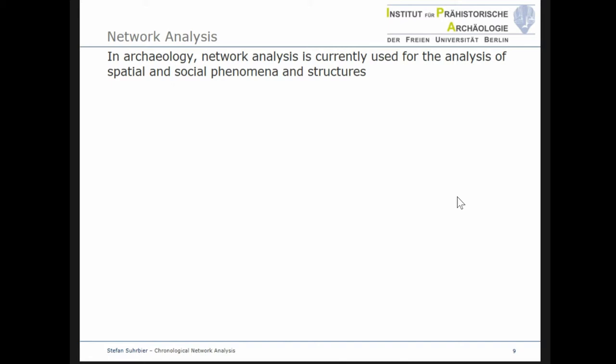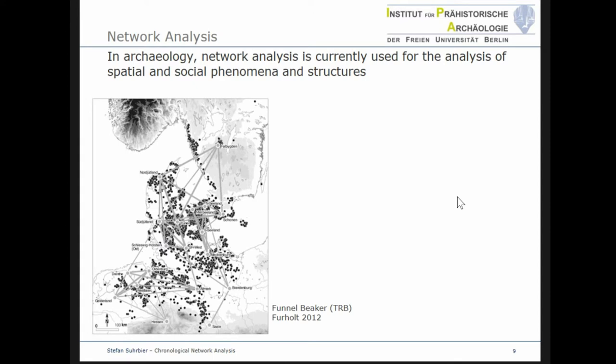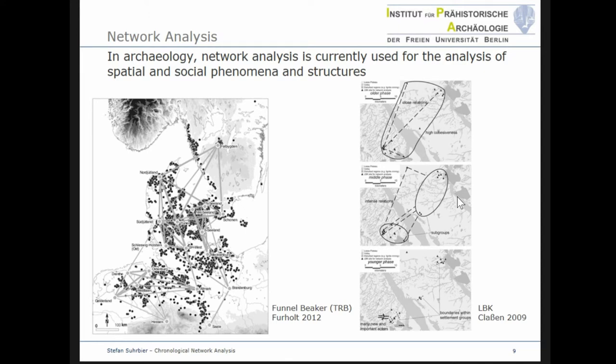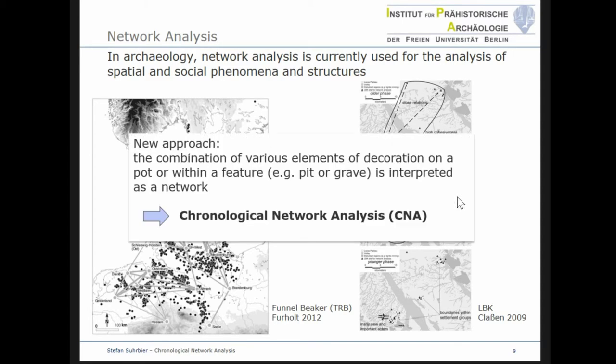Currently in archaeological studies, network analysis is usually used to analyze spatial and social phenomena, as is also reflected by the talks in our session. Studies on spatial network analysis in Central European literature include, for example, Martin Furholt's analysis of funnel-beaker networks or Erik Claßen's analysis of LBK networks of the Rhineland. My approach differs from these since I used network analysis for analyzing chronological dimensions. I interpreted the combination of various elements of decoration on a pot or in a feature like a pit or grave as a network.